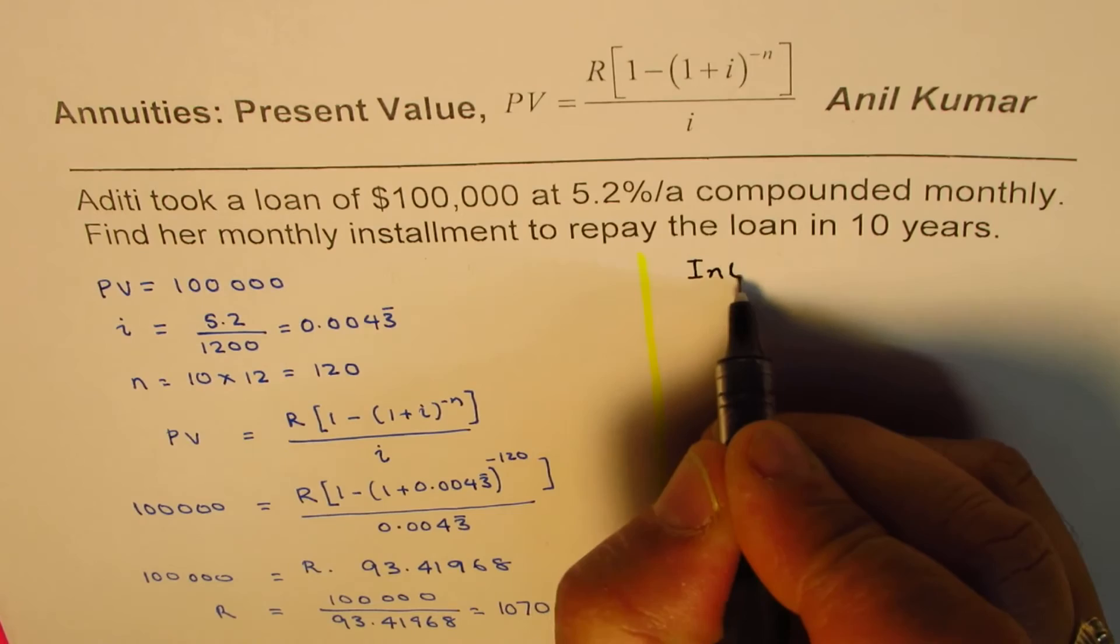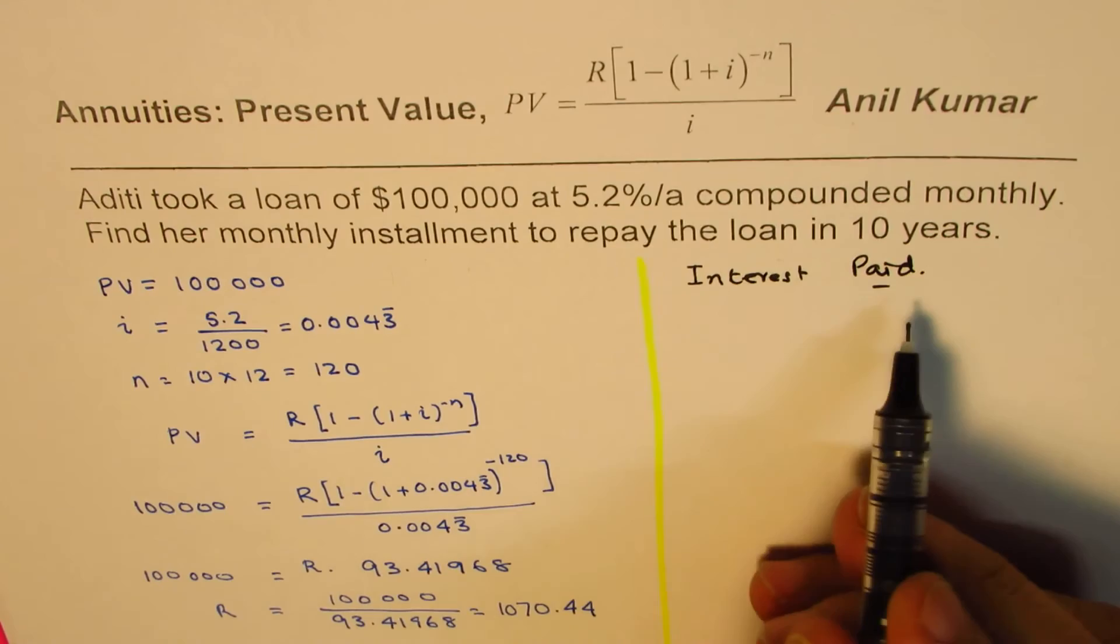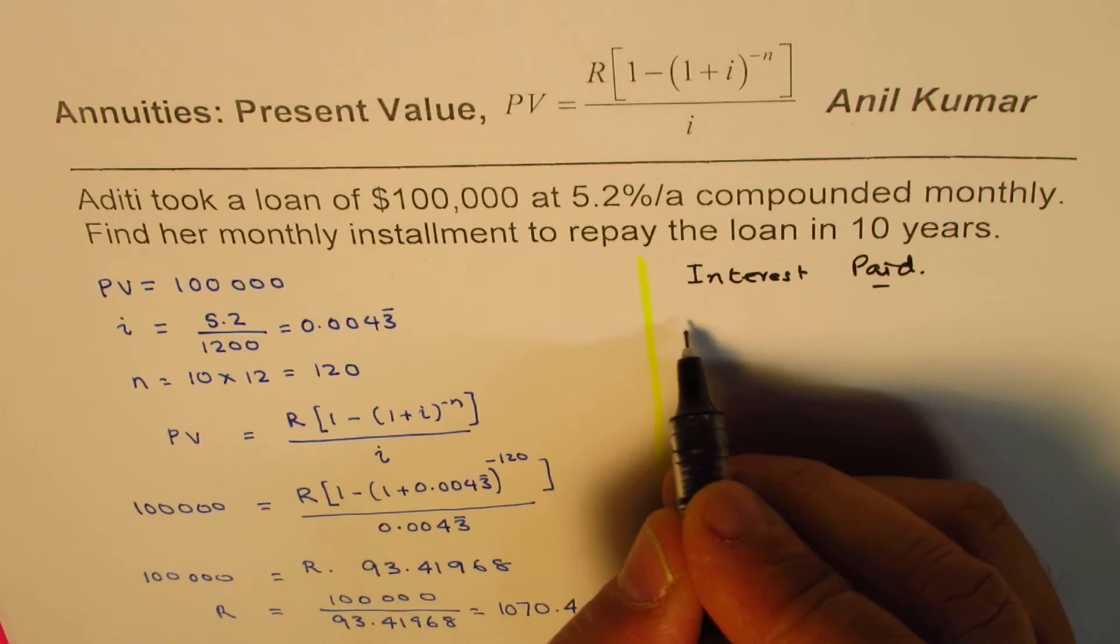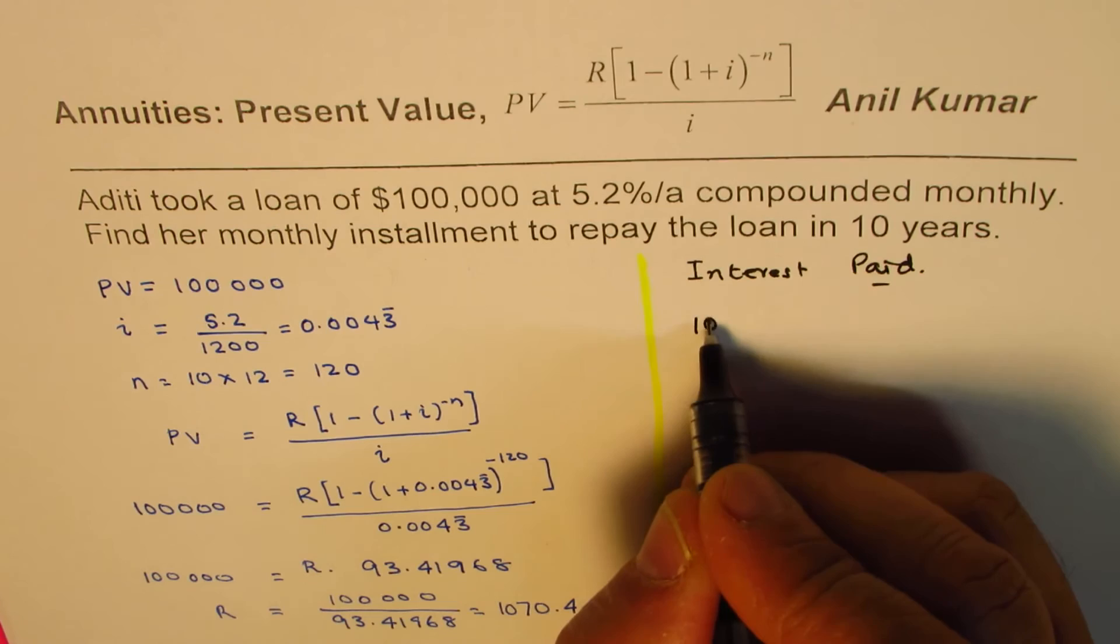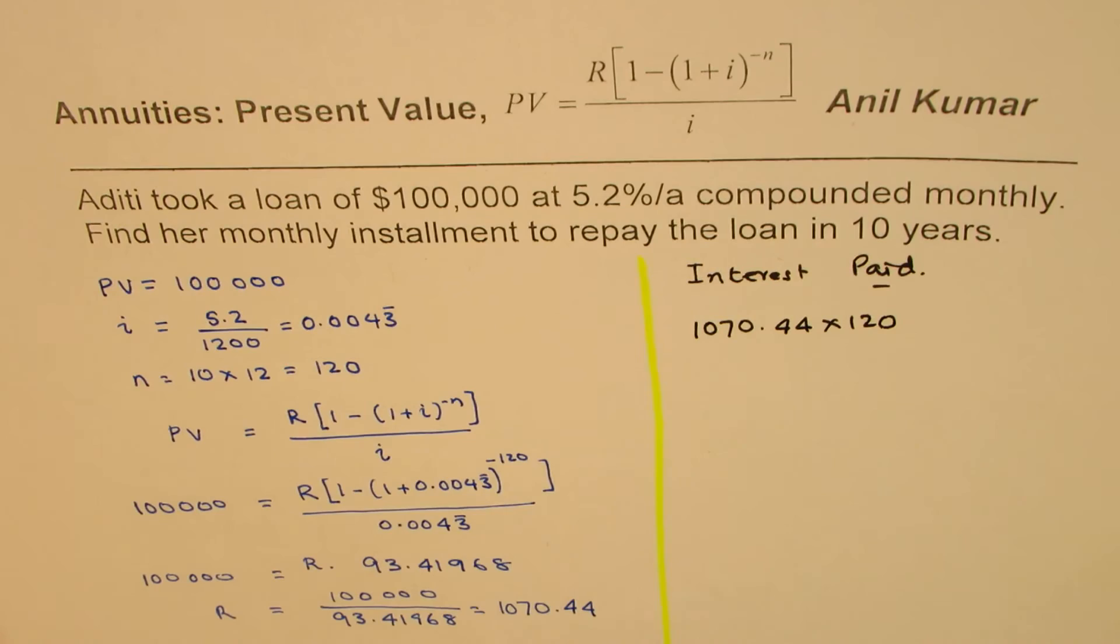Interest paid will be the amount paid in 120 installments. So the total amount paid will be 1070.44 times 120. These are the number of installments.